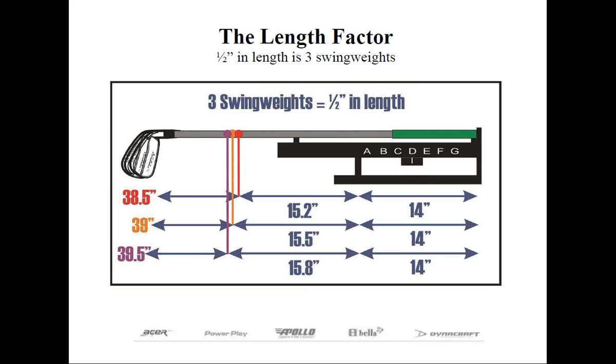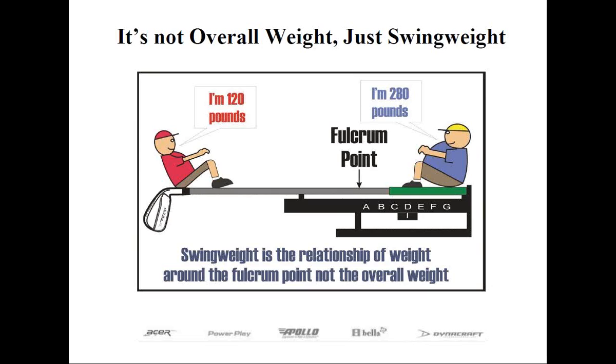Now, before we get started in the other topics on swing weighting, I want to reinforce what swing weighting really is. When someone says a club has a swing weight of D0 and another has a swing weight of D2, which is the heavier club? Well, the likely answer for most people is D2 is heavier. But in fact, it's not predicated solely on the overall weight of the club, only the relationship of the club's masses around the 14 inch fulcrum point.